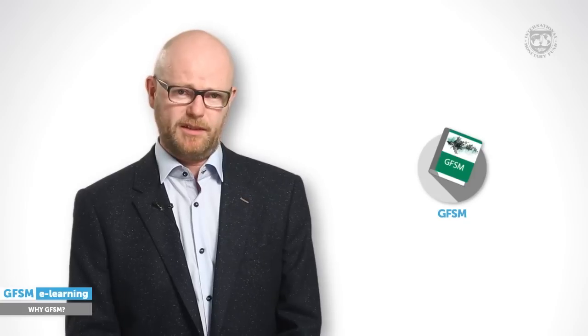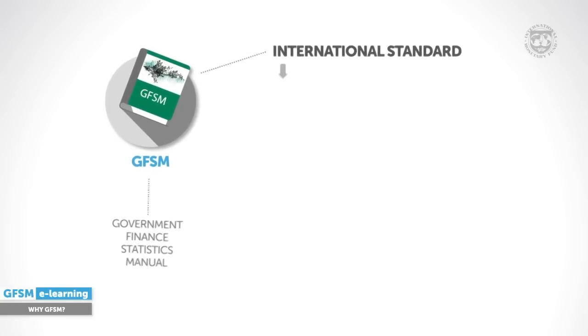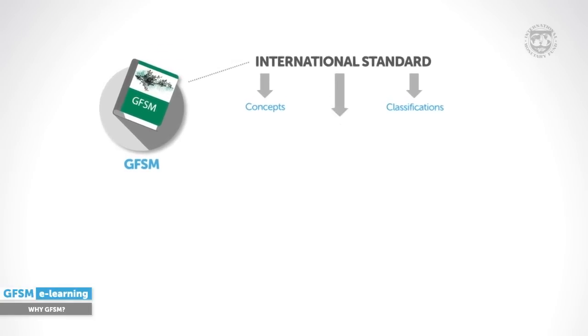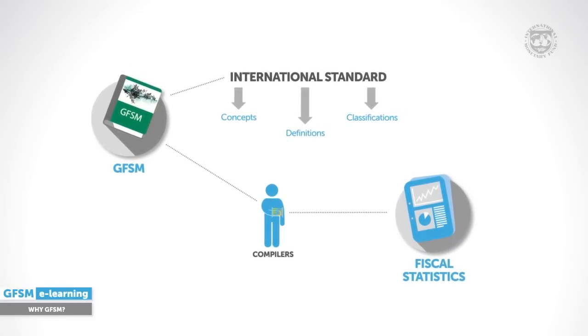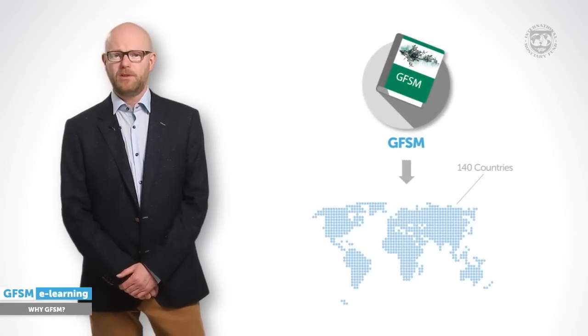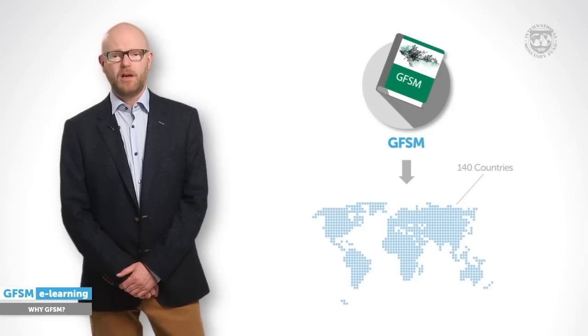Welcome to the GFSM e-learning series. In this episode I'm introducing you to the IMF standard for Government Finance Statistics. GFSM refers to the Government Finance Statistics Manual. It is an international standard that provides concepts, classifications and definitions that help compilers prepare and report fiscal statistics so that they are fit to use for policy analysis. More than 140 countries around the world are currently using GFSM. It is thus widely accepted as a basis through which fiscal statistics are comparable over time and across countries.